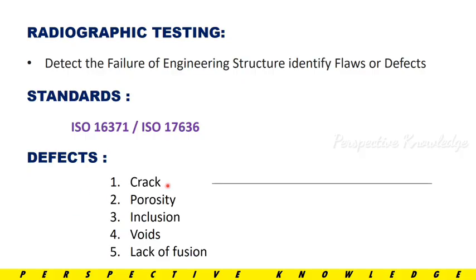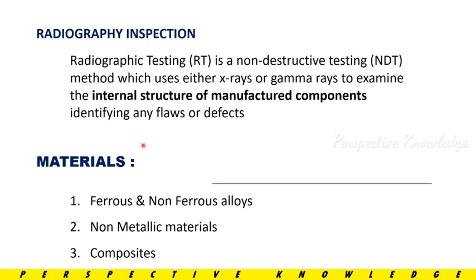The defects we look for include: Cracks, Porosity, Inclusion, Voids, and Lack of Fusion. Radiography Testing is a non-destructive testing method which uses either X-rays or Gamma-rays to examine the internal structure of manufactured components, identifying any flaws or defects.